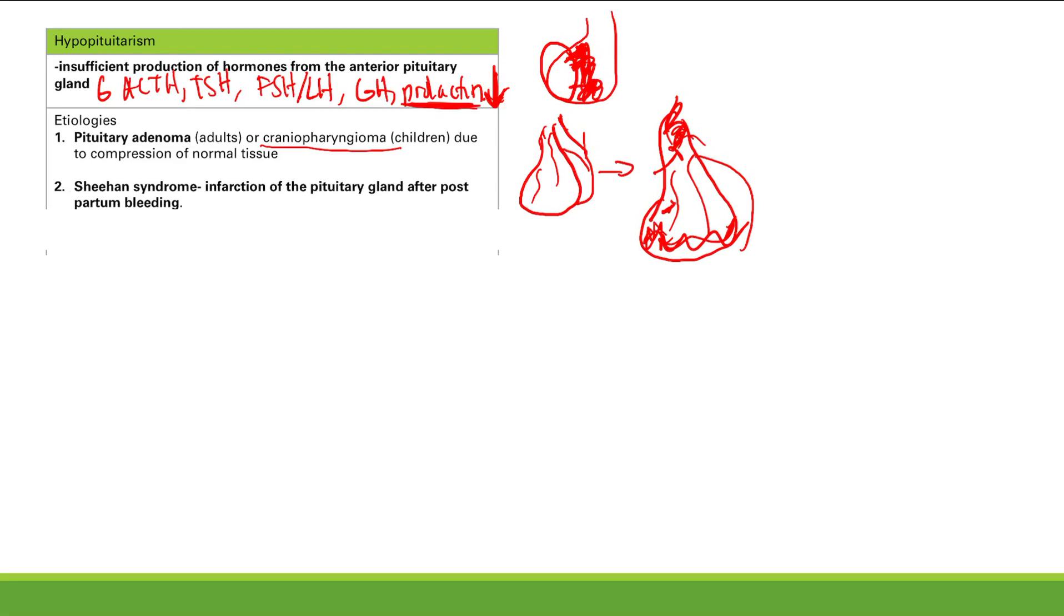So you see a patient that's coming to you, postpartum, unable to lactate, tells you a story of lots of significant bleeding during pregnancy. It's probably Sheehan syndrome causing hypopituitarism. They're also going to get things like failure of menstruation, and they're going to get the rest of the symptoms. So that's Sheehan syndrome.